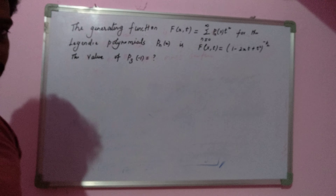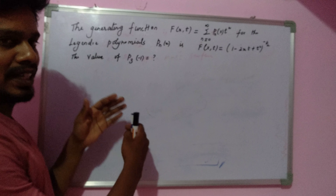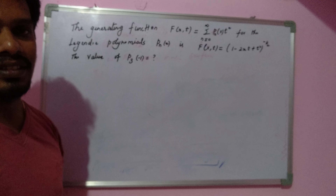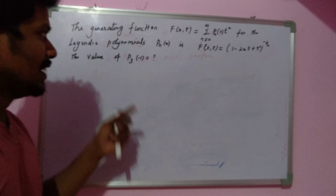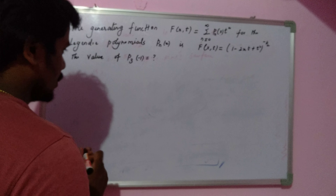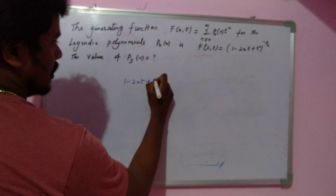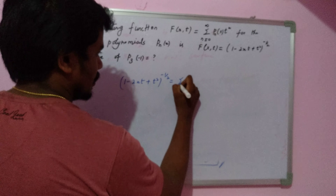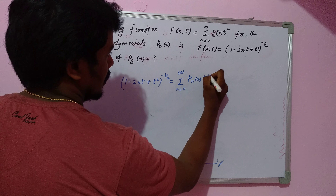We need to find the value of P₃(-1). First, we substitute x = -1 wherever x appears, then expand using the binomial expansion, and compare the coefficient of t³. That will give us the answer for P₃(-1). We write the Legendre generating function: (1 minus 2xt plus t squared) to the power minus one-half equals the summation from n=0 to infinity of Pn(x) times t to the power n.